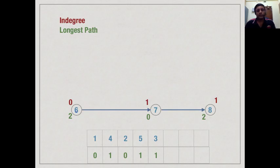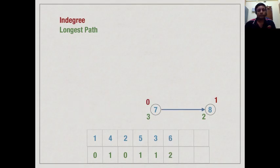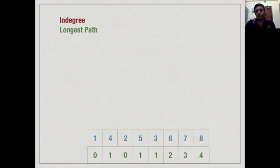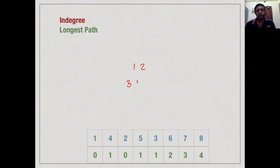Now something interesting happens: vertex 6 has a longest path of 2. Vertex 7 had been believed to have a longest path of 0, but through 6 it has a longer path, so the path to 7 is updated from 0 to 3. Because of this, when we go from 7 to 8, the longest path for 8 is updated from 2 to 4. Finally, we enumerate vertex 8 and compute its longest path as 4. This matches our earlier result: the program takes 5 semesters, grouped by longest-path value — 1 and 2 in semester 1, then 3, 4, 5, then 6, then 7, then 8.